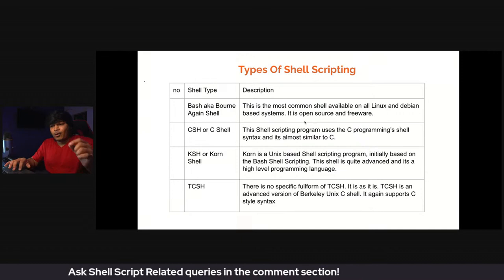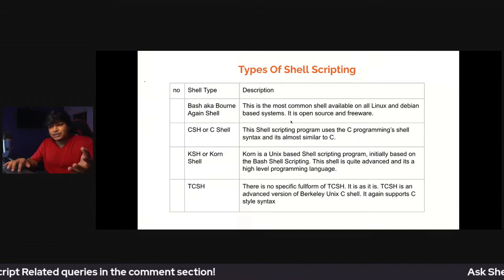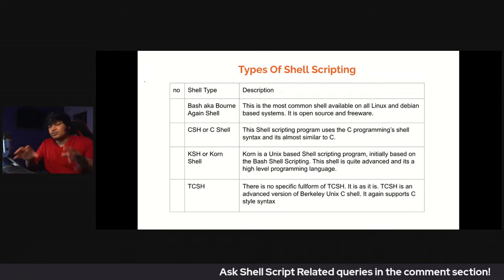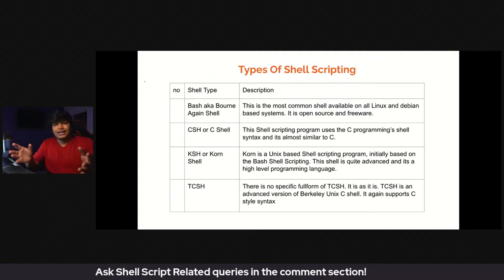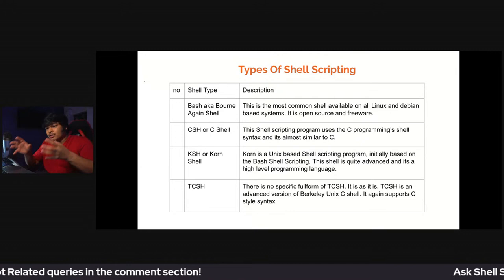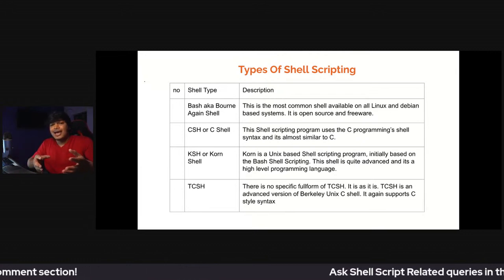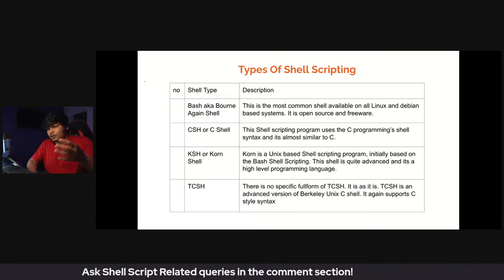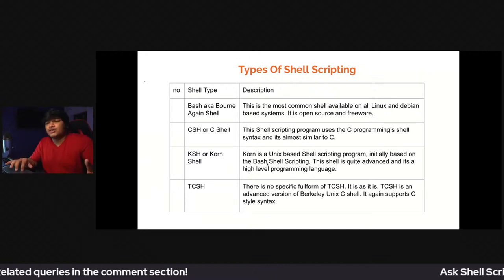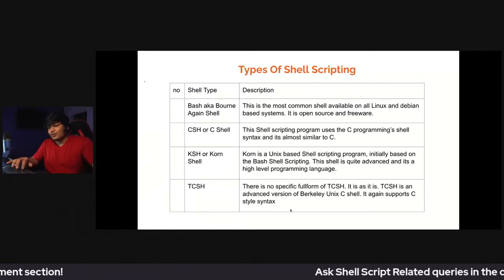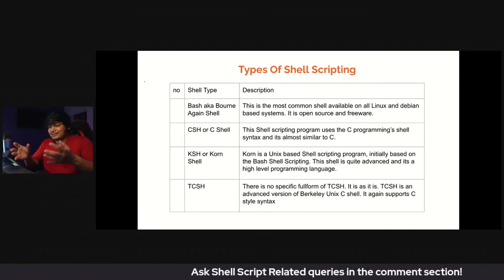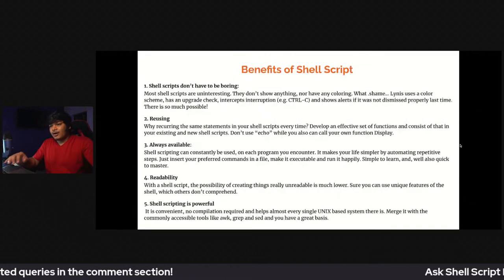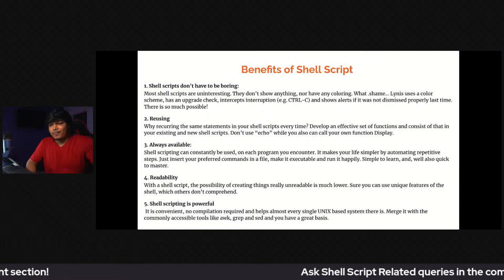There are a lot of types of shells. The first is the Bourne shell, also known as bash or Bourne-again shell — this is very common, and you'll most always find it at /bin/bash. Another one is C shell, which has syntax similar to C programming. Then there's Korn shell, which is a bit more advanced, and tcsh, which is the most advanced version of the C shell.